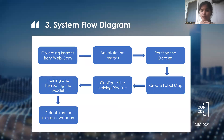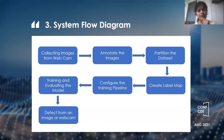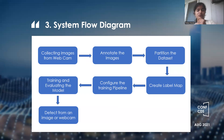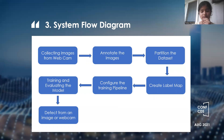Now we can see the system flow diagram. First, we are collecting the images from the webcam. After collection, annotation of the images is done and partitioning of the dataset. Creation of a label map is the next step, followed by configuring the training pipeline, then training and evaluating the model. Finally, we are detecting the image from the webcam in real time.